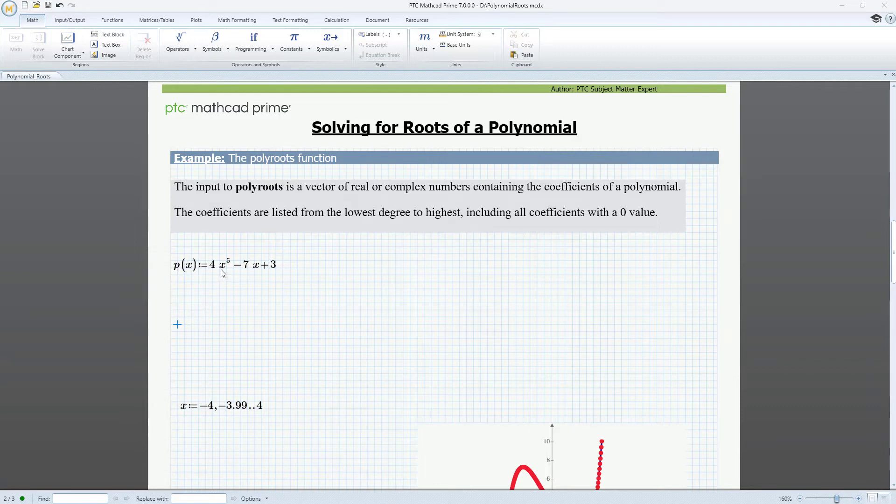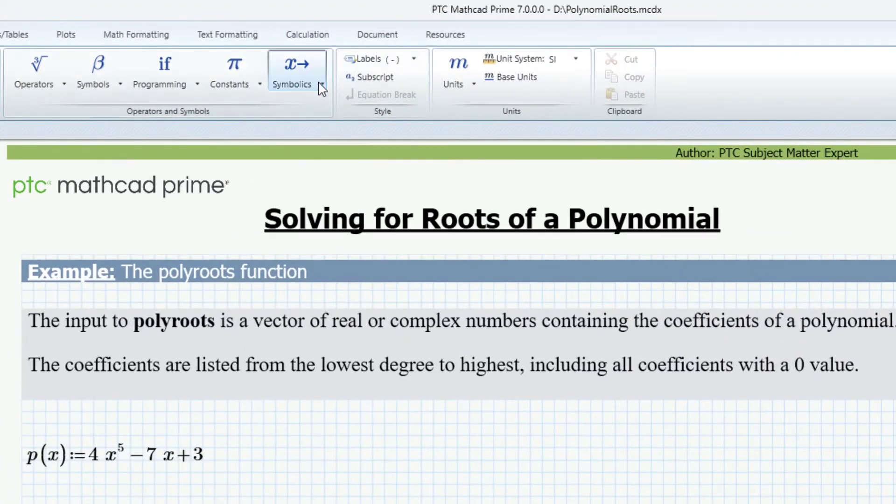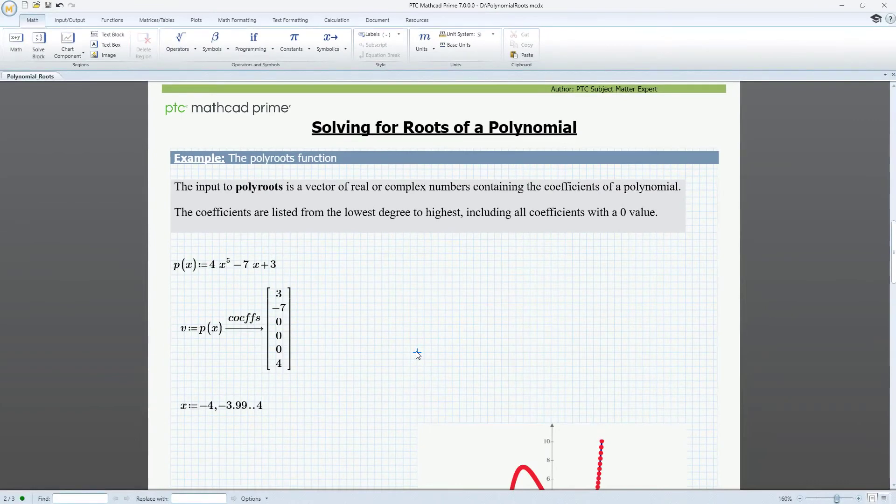For example, the function p(x) is a polynomial of the fifth degree. We can manually enter the coefficients in a vector, but it's easier to use the symbolic coefs keyword to extract the coefficient values. Let's use variable v and apply symbolic coefs on function p(x). The function has six coefficients.